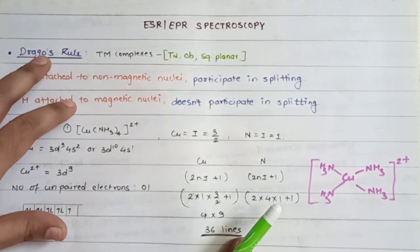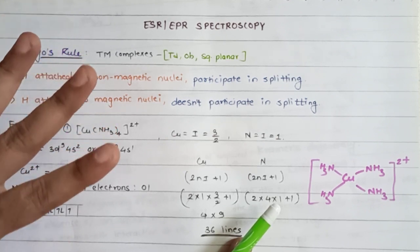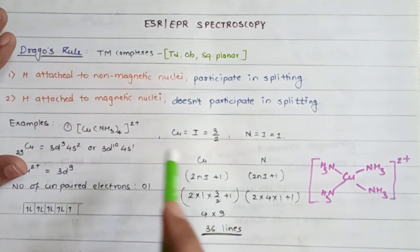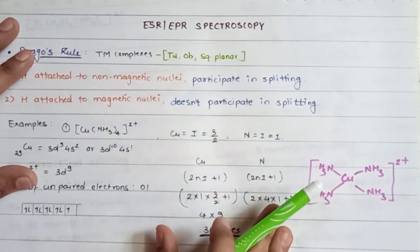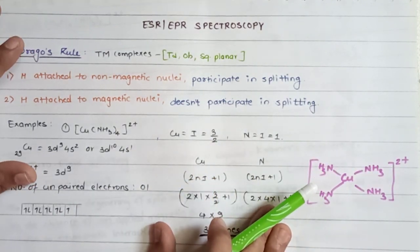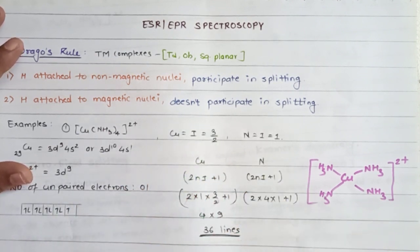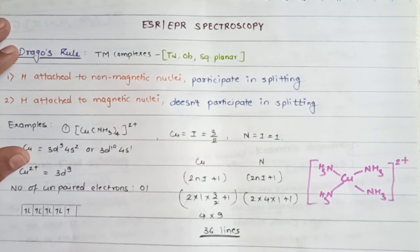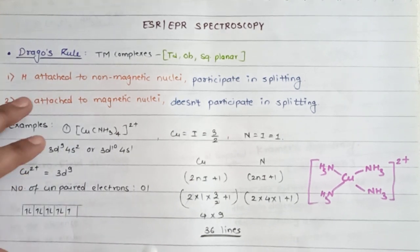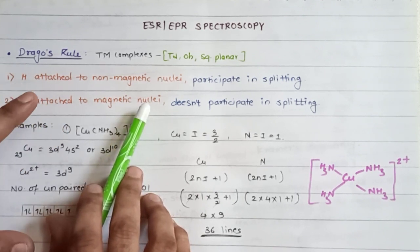To understand the Dragos rule for different kinds of transition metal complexes, first we should understand what type of complexes are present. You are aware that in transition metal complexes you will get tetrahedral, octahedral, and square planar types. In the Dragos rule, there are two main key points which you need to know completely.